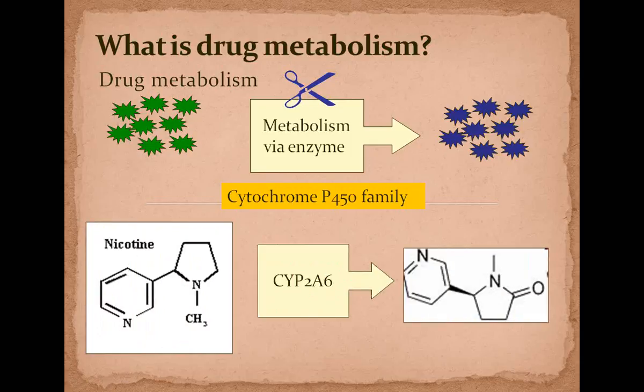An example of this would be nicotine. When CYP2B6 interacts with nicotine, it breaks it down and changes its structural conformation. When you change the structure of a drug, you change its shape — and when you change its shape, you change its function. Shape confers function; the shape of the molecule determines its function. If you change its shape, you change its function. You can deactivate or activate a drug by changing its shape. These enzymes do that by breaking or rearranging chemical bonds.